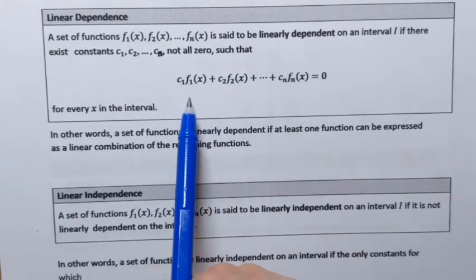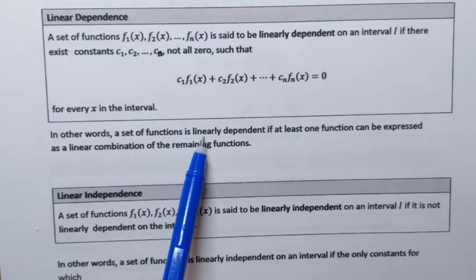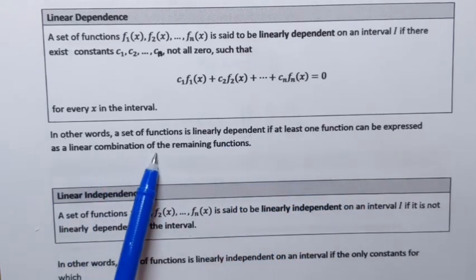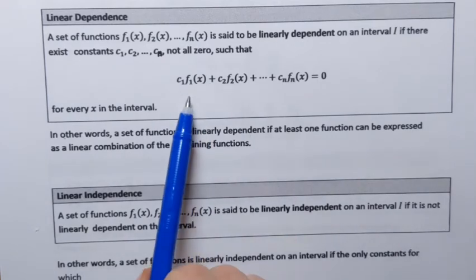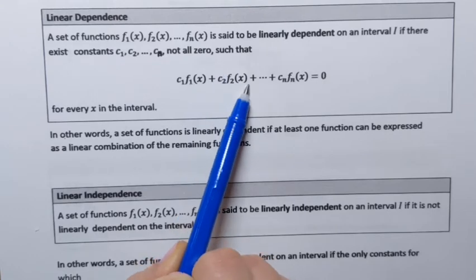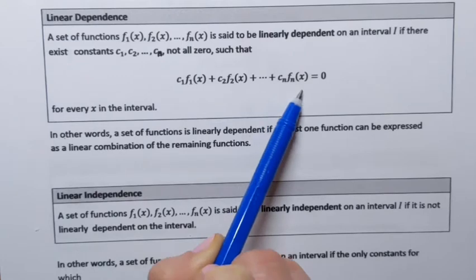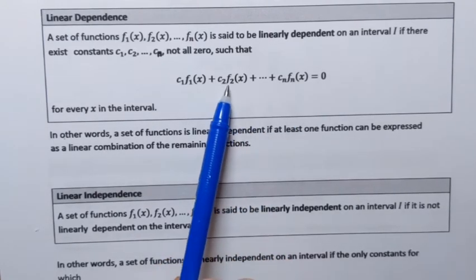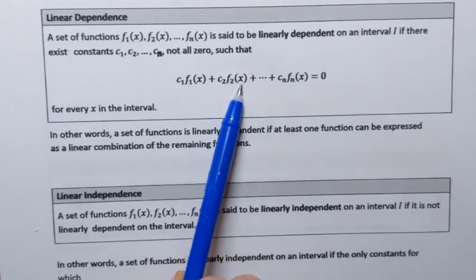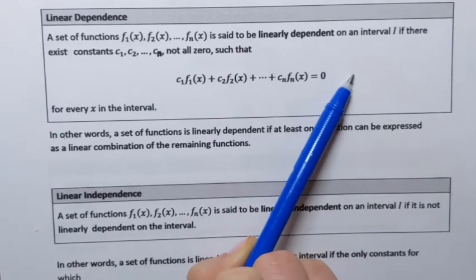Another way to define what we just described is to say that a set of functions is linearly dependent if at least one function can be expressed as a linear combination of the remaining functions. So I can pick any function and isolate it — for example, I can get f2(x) by itself by subtracting all other terms and dividing each term by c2. This way f2(x) is expressed as a linear combination of the remaining functions.